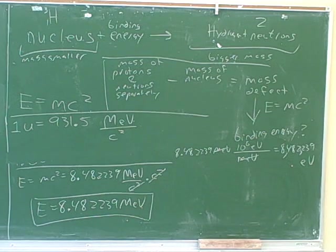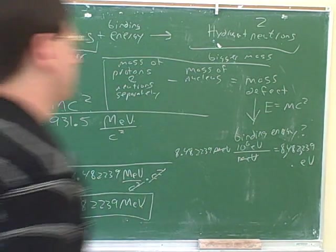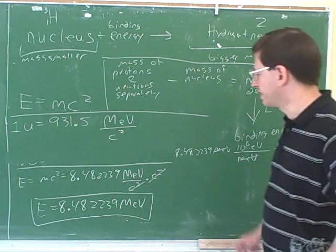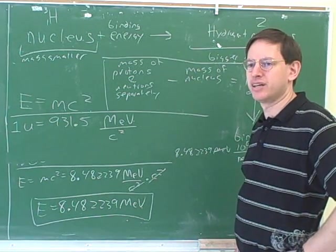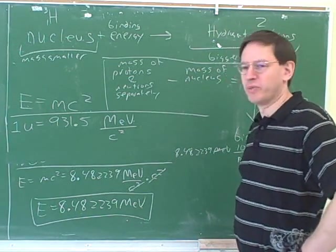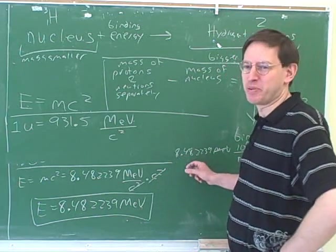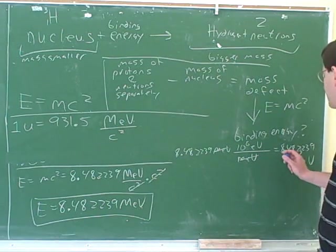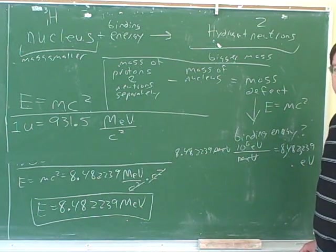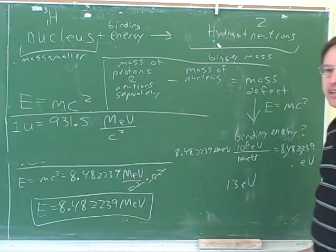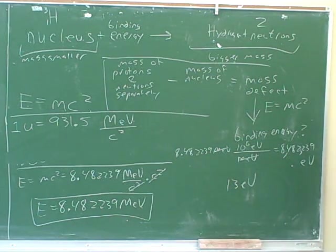It takes a lot more energy to separate the nucleons. More. A lot more or a little more? A lot more. A heck of a lot more basically. There's a huge difference between 8 million and 13. Basically here we're comparing the numbers 8 million and 13. So there's a huge difference between these.